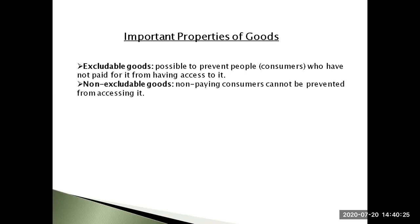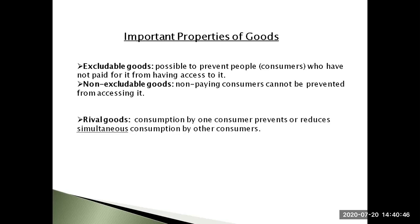Consider the spectrum of excludability first. On one end of the spectrum, a good or service is called excludable if it is possible to prevent people or consumers who have not paid for it from having access to it. By comparison, a good or service is non-excludable if non-paying consumers cannot be prevented from accessing it.